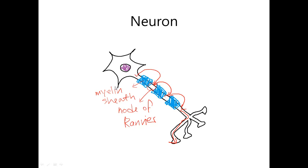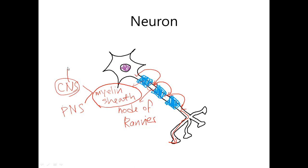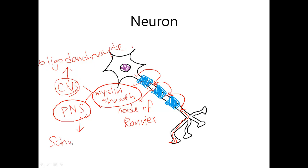The thing that makes the myelin sheath is different in the central and peripheral nervous system. In the central nervous system, a cell called oligodendrocyte forms this myelin sheath. In the peripheral nervous system, something called a Schwann cell makes this myelin sheath.